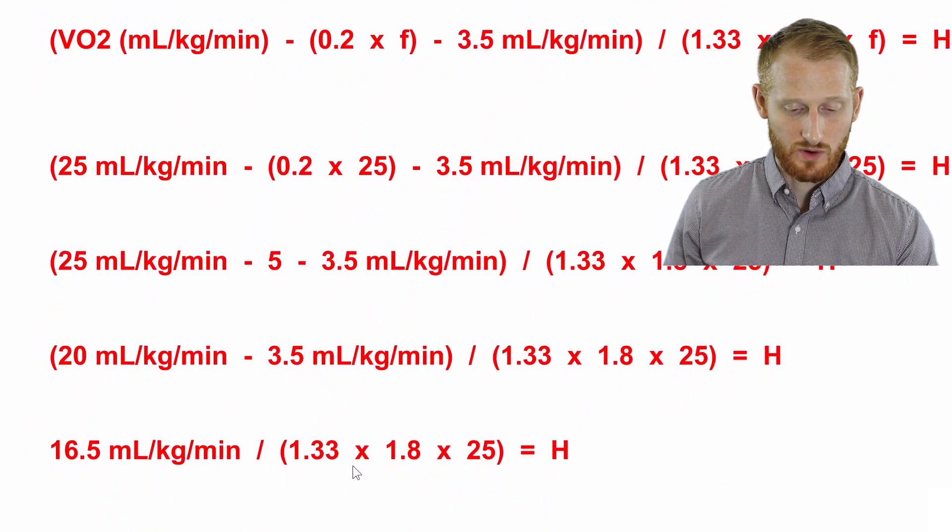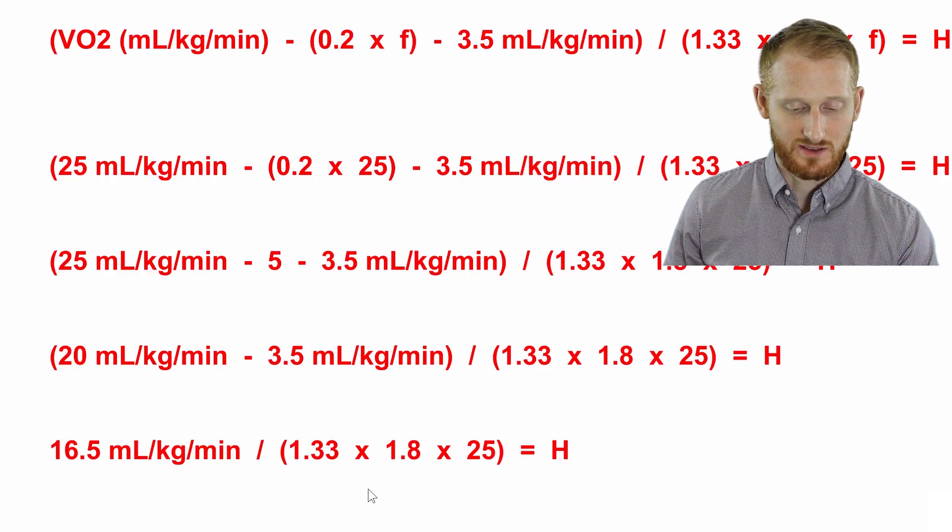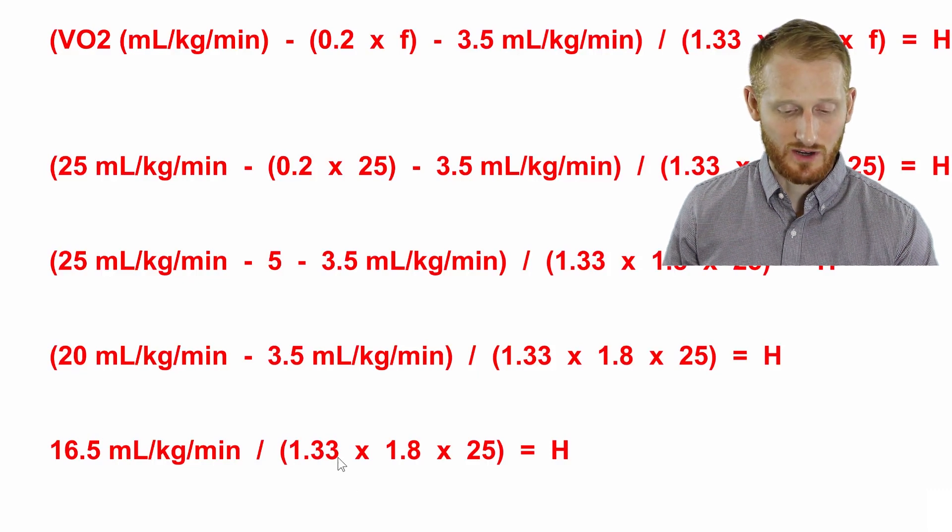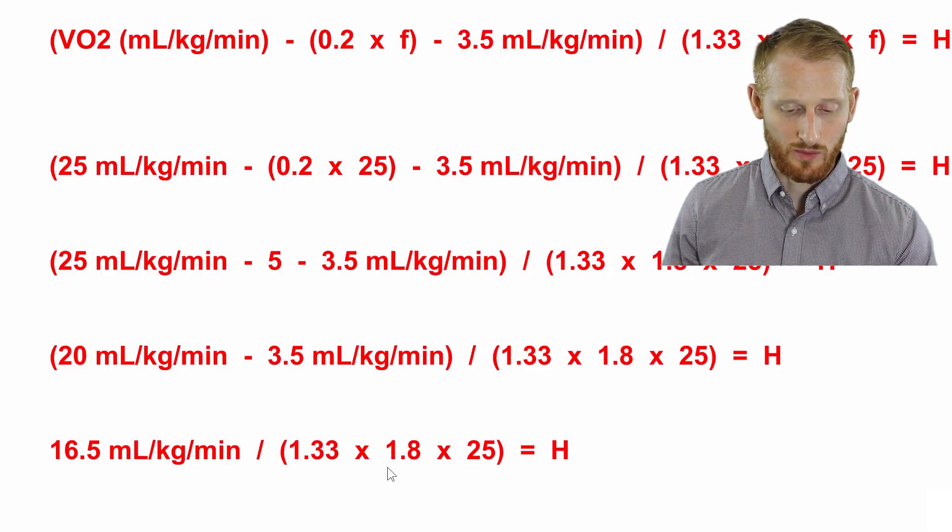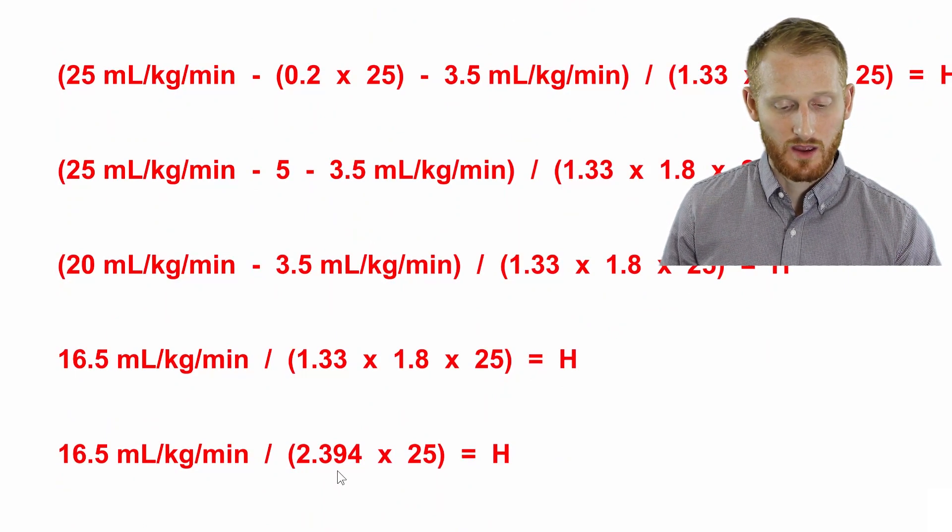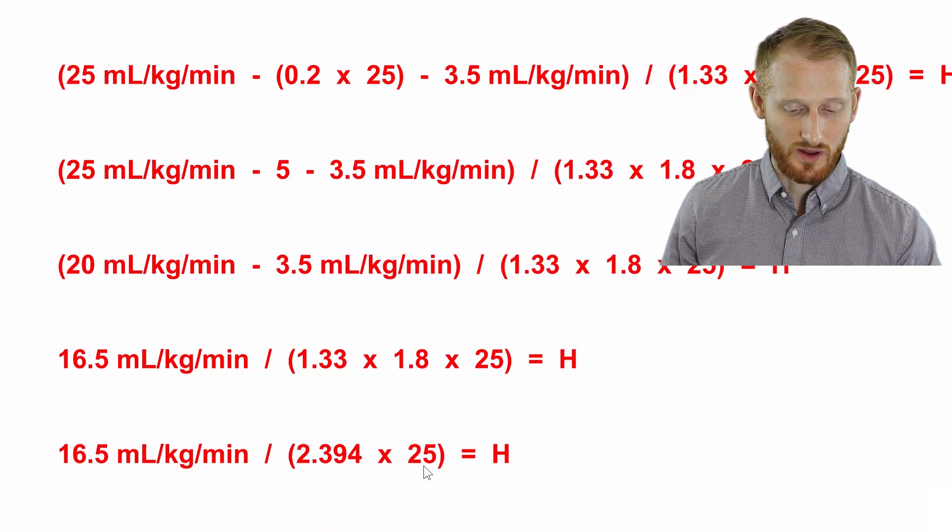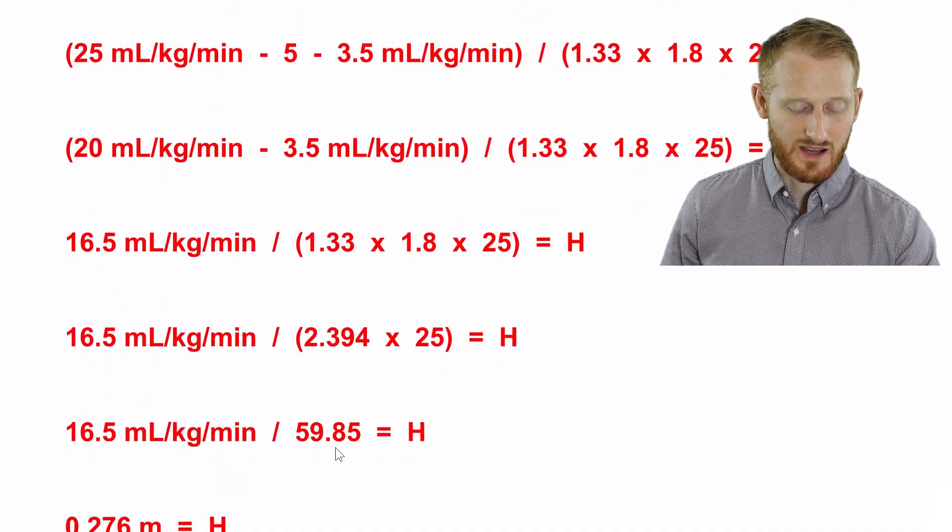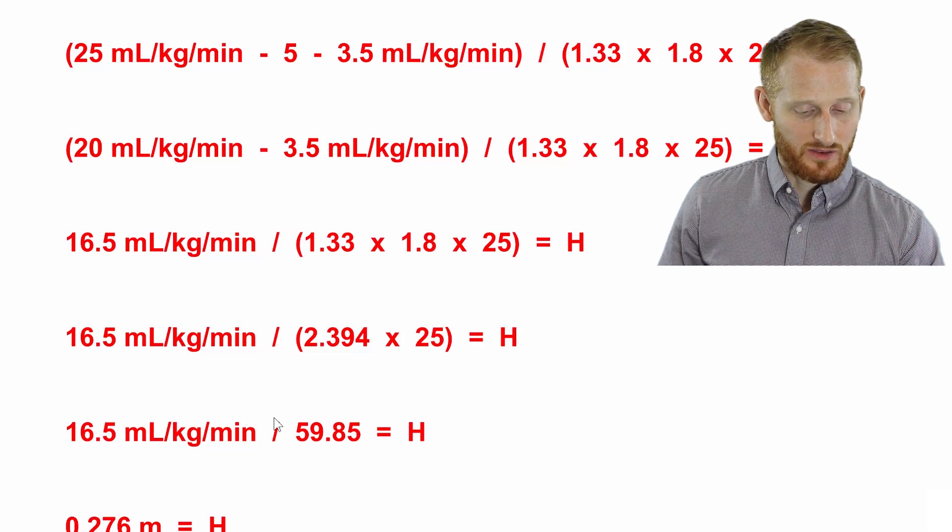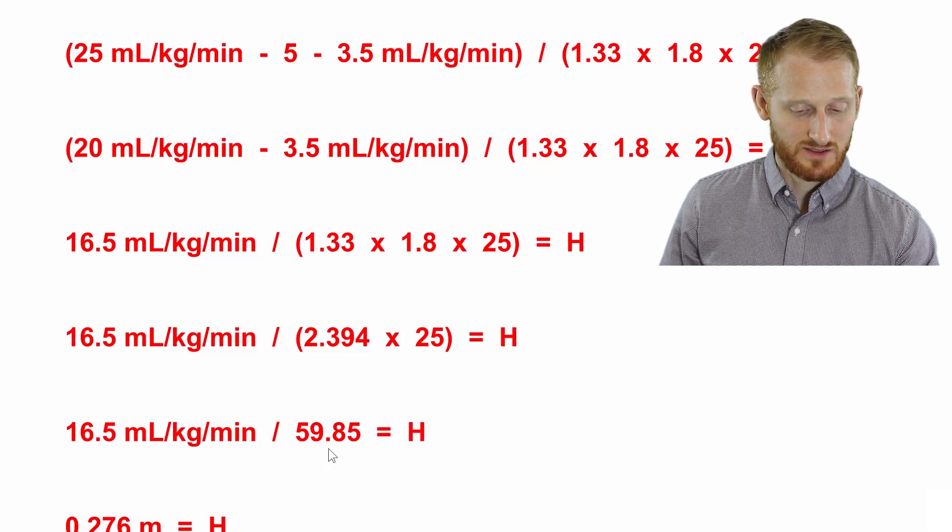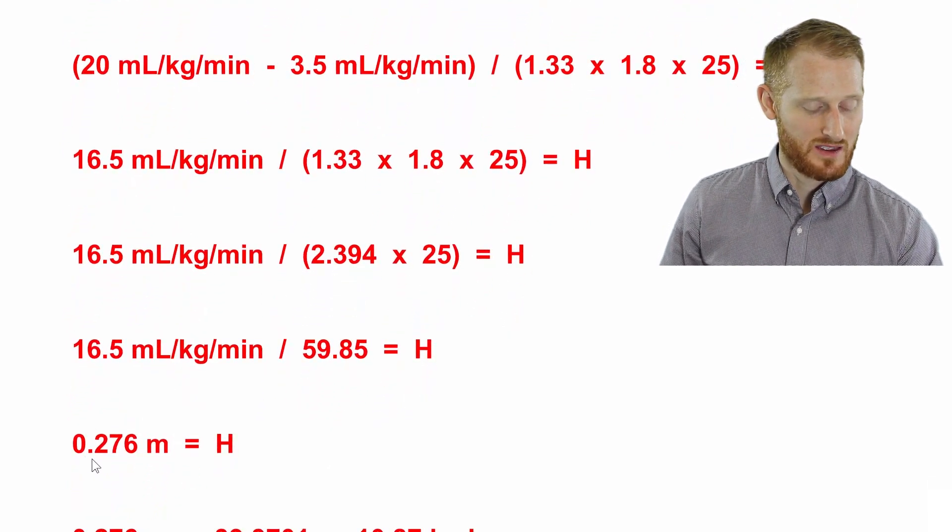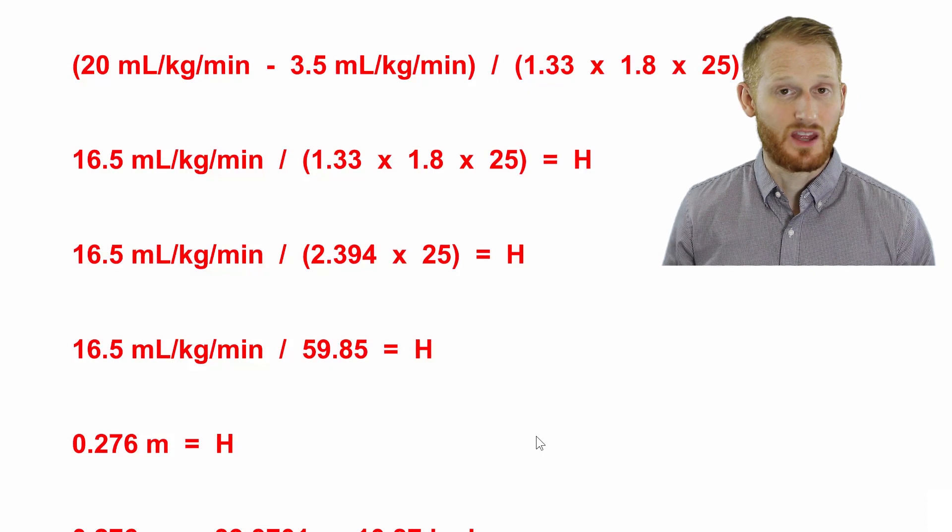And then we need to work on the other set of parentheses here. And this is all just multiplication, so it doesn't matter the order. So I'm just going to go left to right. So 1.33 times 1.8, that gives us 2.394. Now 2.394 times 25, that gives us 59.85. Then I'm going to take the 16.5, divide it by 59.85 to get our actual step height. And this is going to be in meters. So we get 0.276 meters for our step height.